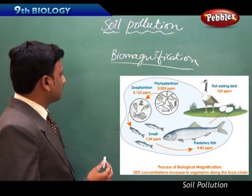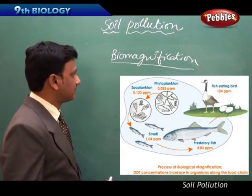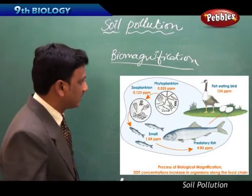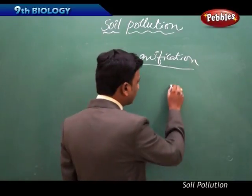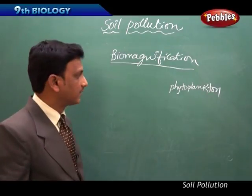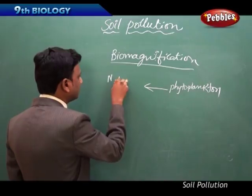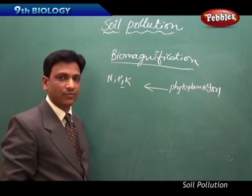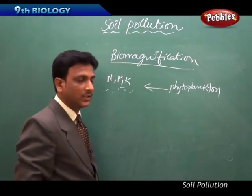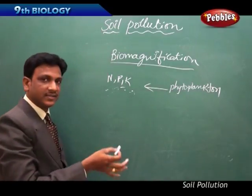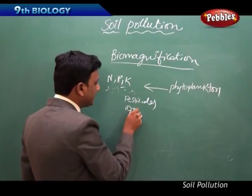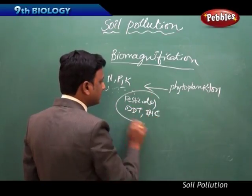Biomagnification. The nutrients required for normal plant growth - like Nitrogen, Phosphorus, Potassium - are found in natural water in very low quantities. Small tiny plants that live in water are called phytoplankton, and small tiny animals that live in water are called zooplankton. Phytoplankton collect these minerals to carry out photosynthesis and for their growth. Along with this, any pesticide mixed with the water - like DDT and BHC - is also taken up by the phytoplankton.